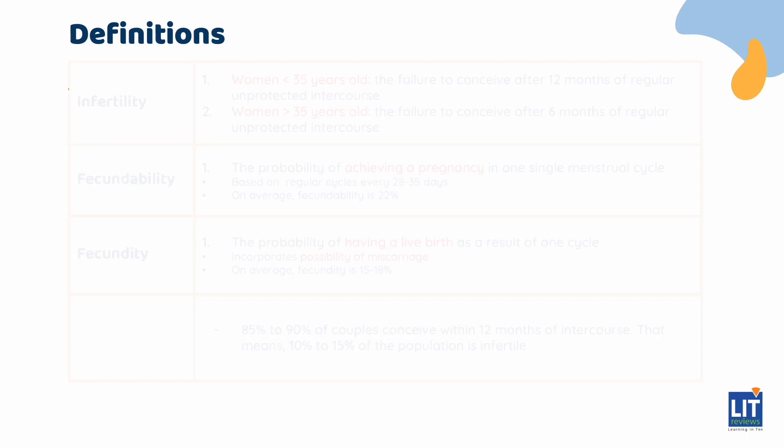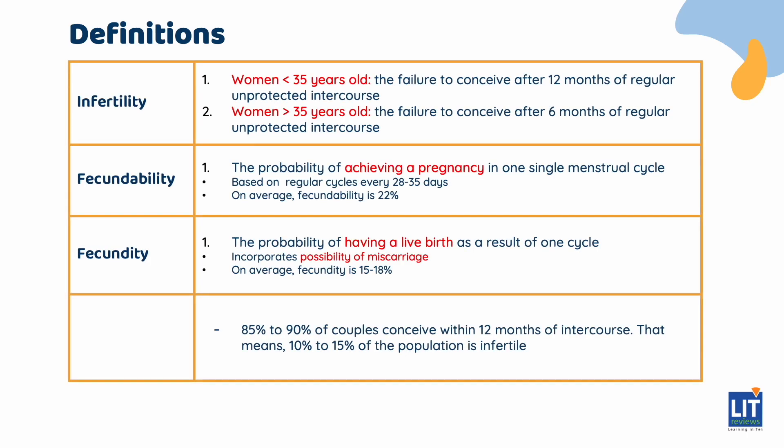First, we need to define the concept of infertility. For women less than 35, infertility is the failure to conceive after 12 months of regular unprotected intercourse, obviously without the use of contraception. For women older than 35, infertility is the failure to conceive after six months of regular unprotected intercourse.